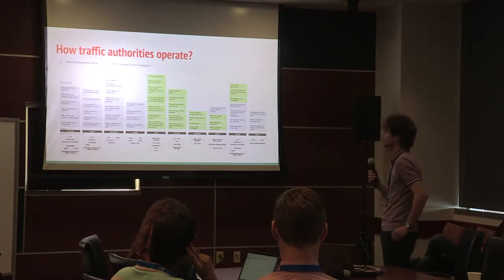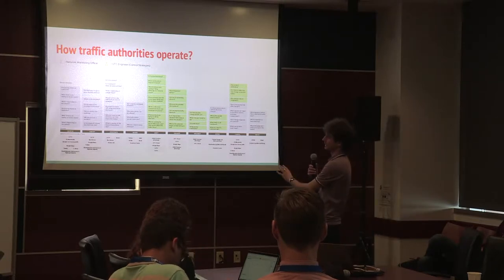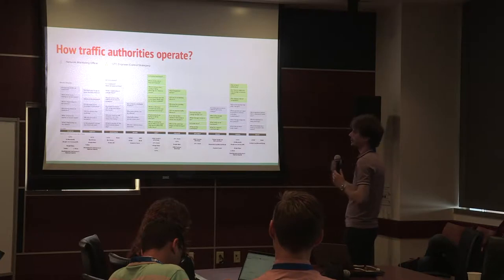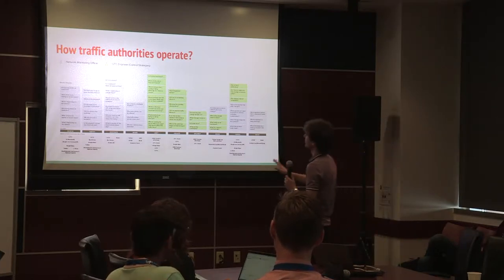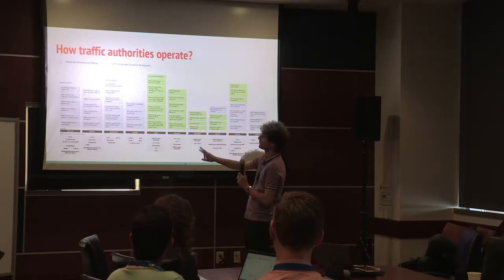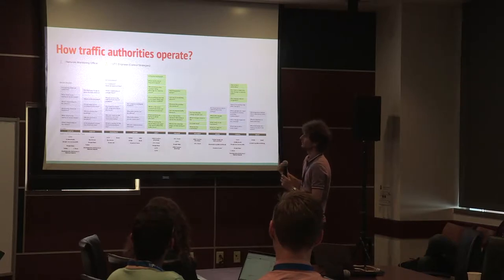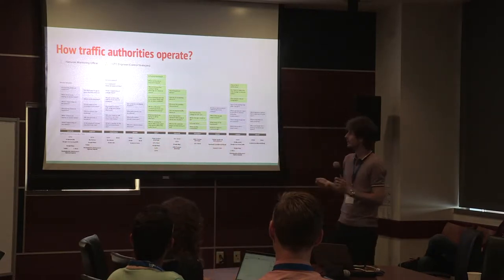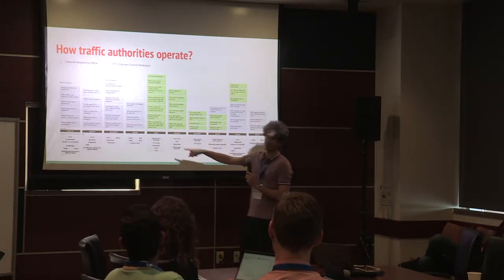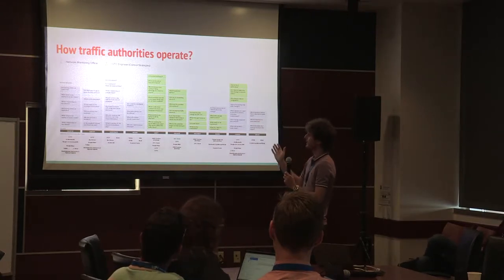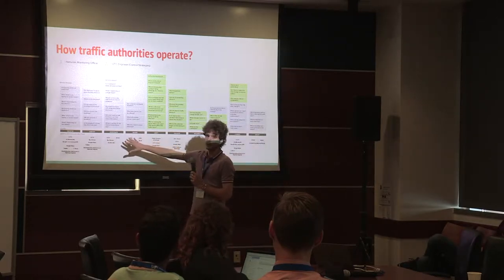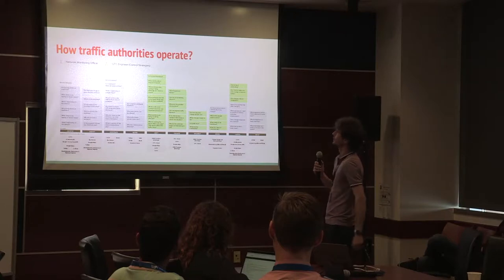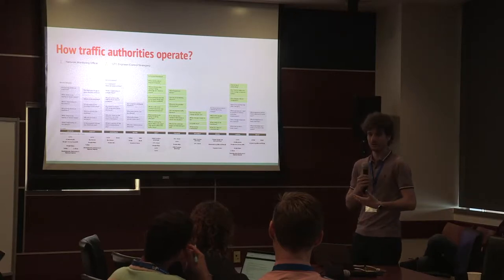In terms of how traditional traffic authorities operate, we had interviews with authorities from Yorkshire and Midlands in the UK. There are two key roles in the daily routine: network monitoring officers and control/traffic engineers. Monitoring officers monitor traffic via CCTV, Twitter, Google Maps, taxis, buses — everything to understand what's happening on the streets. If something looks suspicious, they identify, investigate, and inform. One of the easiest ways to understand what's happening is calling bus or taxi drivers in the area.